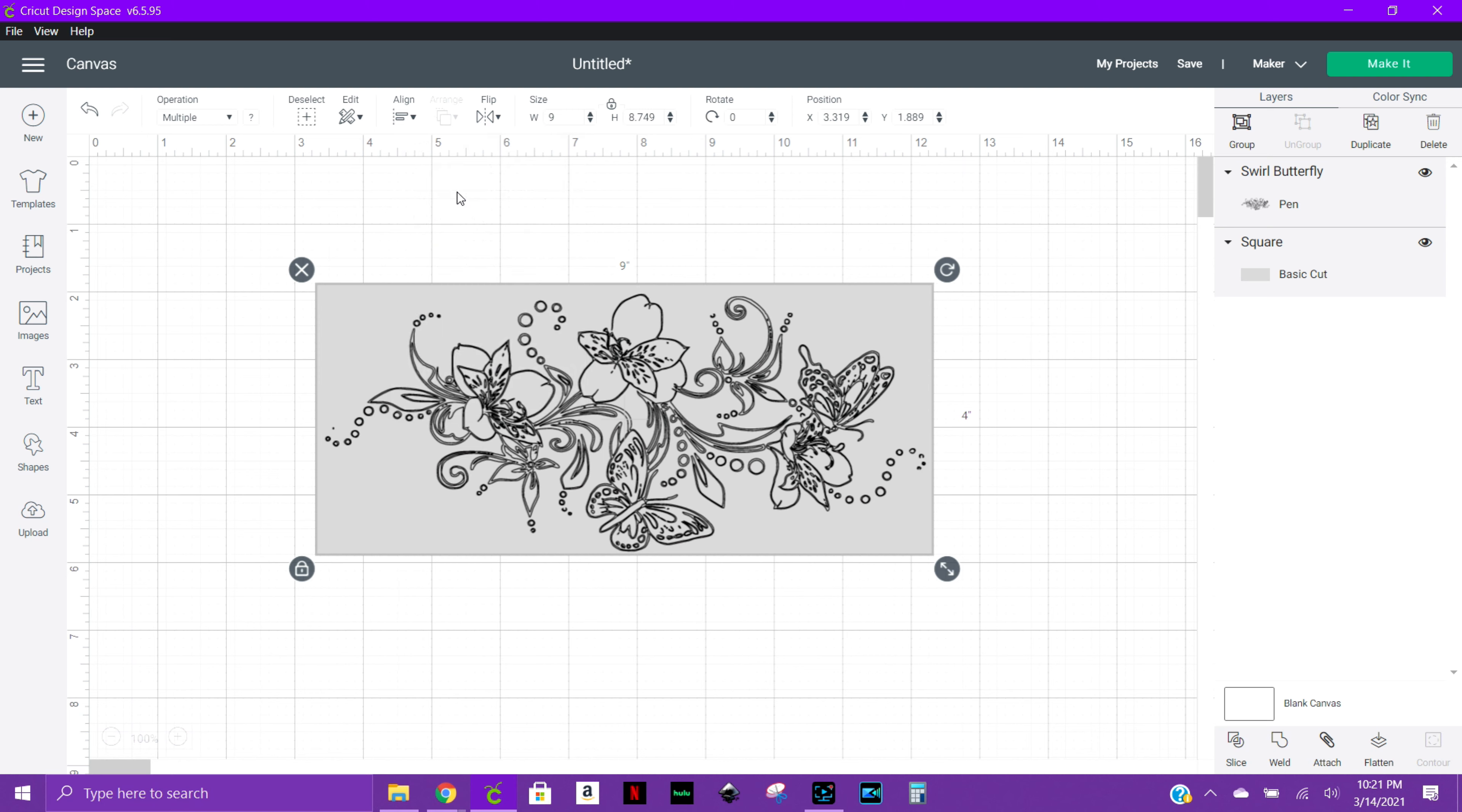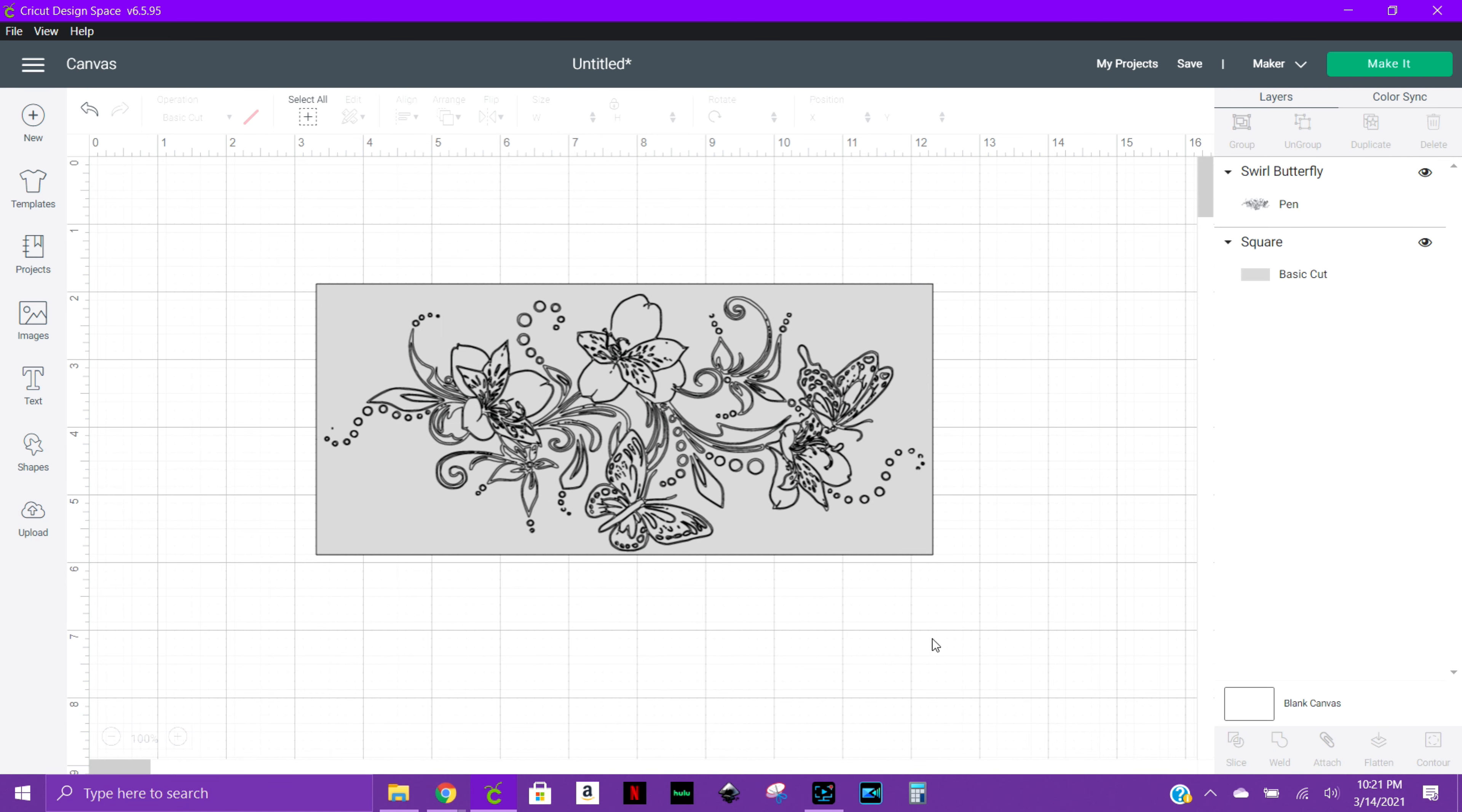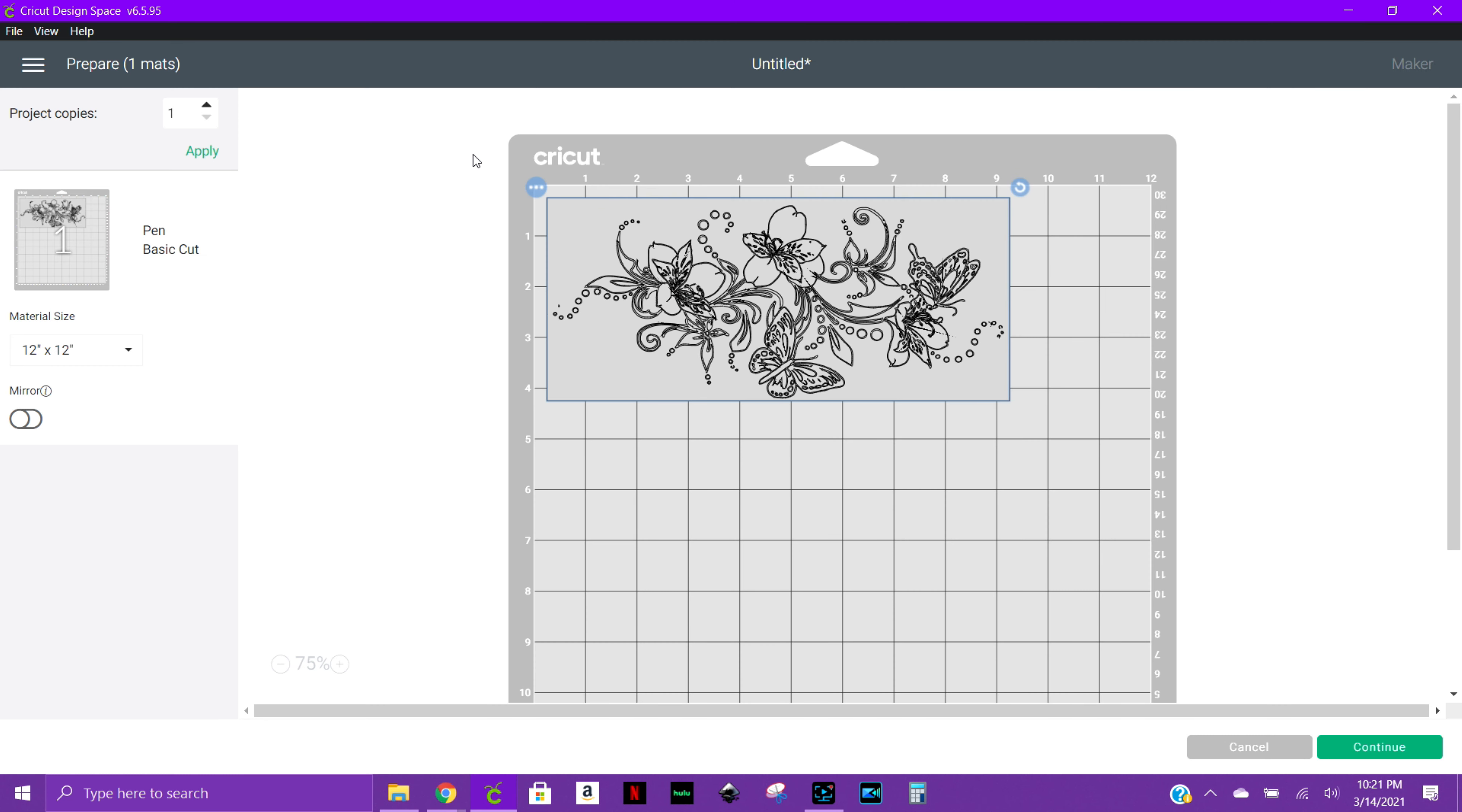All right, so what we're going to do is go ahead and attach, and at this point we can go ahead and make it. So we are going to be using the pen to draw with, and then we are going to cut around the edges, and this is going to actually be our wrap. Now I will be adding the color in by hand - that's kind of the purpose of this particular project today. We don't need the mirror because this doesn't have any words to it or anything like that. Let me go ahead and get this drawn up and cut out, and then I'll go ahead and add the color.